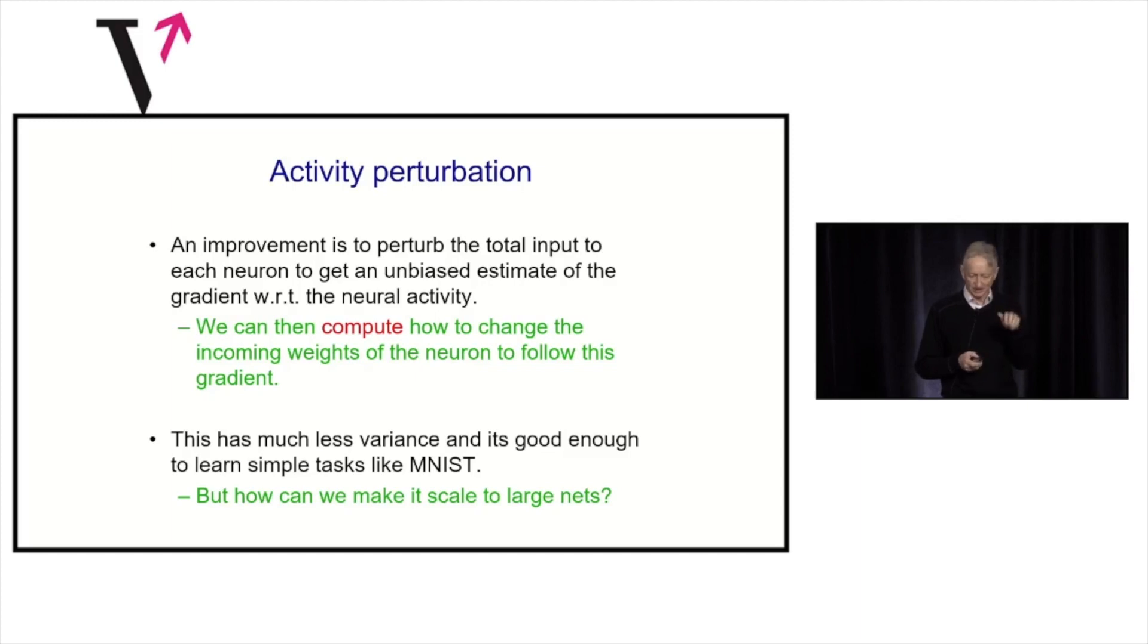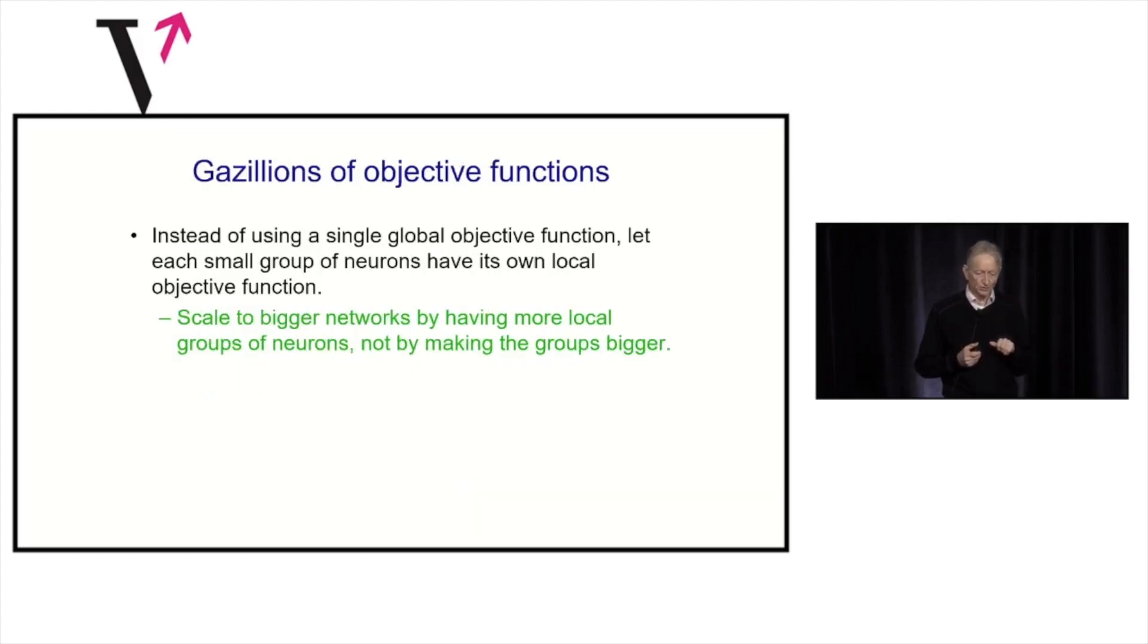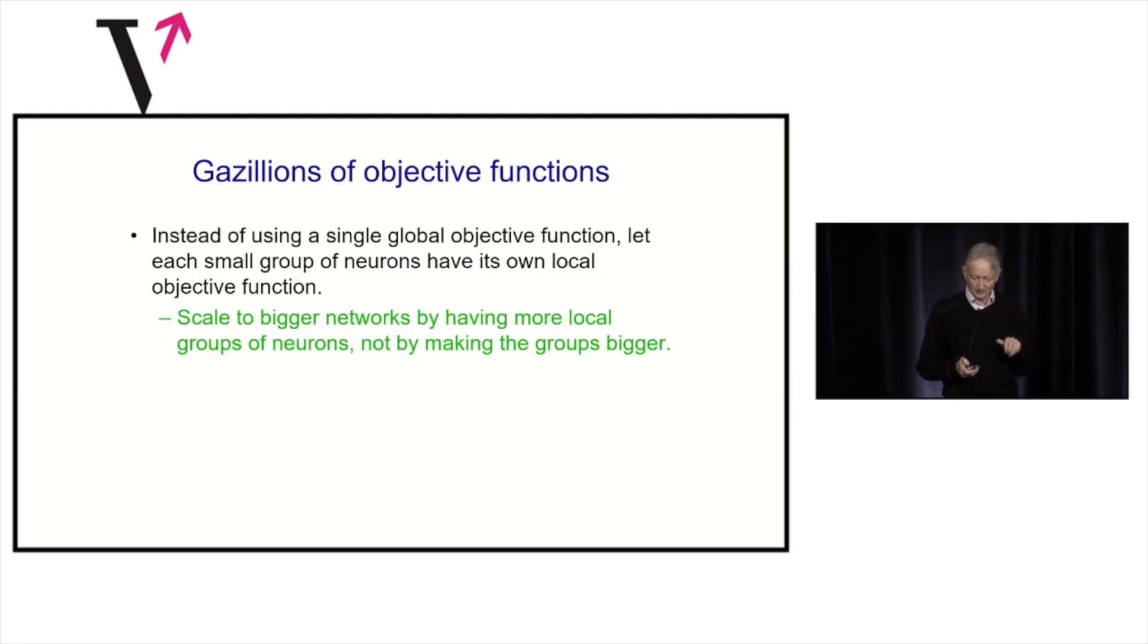The question is, and it works for small things like MNIST, but will it scale up? So, one way to make it scale up to much bigger networks is instead of trying to find an algorithm that scales to more parameters, have an algorithm that works quite well if you don't have that many parameters, and just scale up the number of modules you have that have that many parameters. And the human cortex is a bit like that. It's got millions of these relatively small modules. To do that, you need to have local objective functions for these modules, and that's how you can make these not very efficient learning algorithms scale up to very big systems. But where do these local objective functions come from?